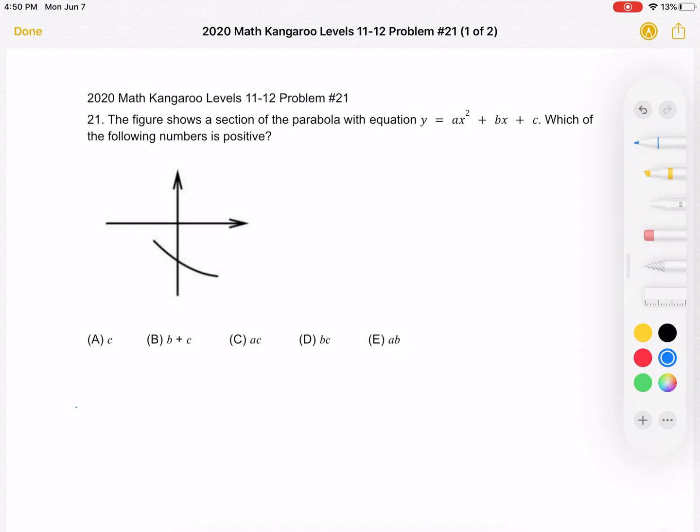Choice a: c. Choice b: b plus c. Choice c: a times c. Choice d: b times c. Or choice e: a times b.